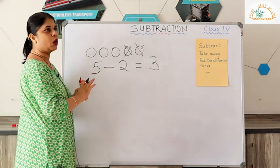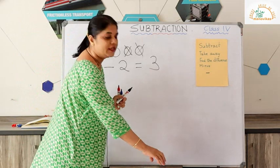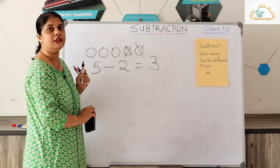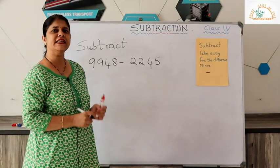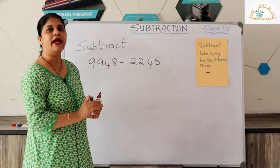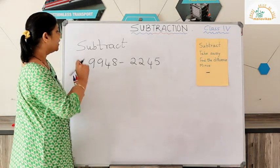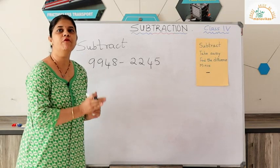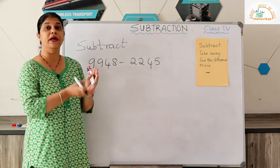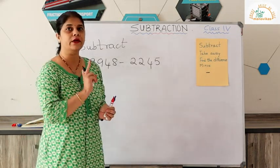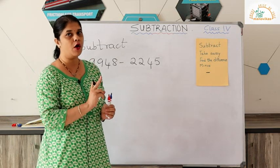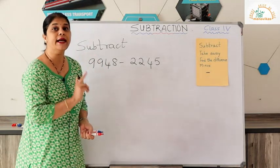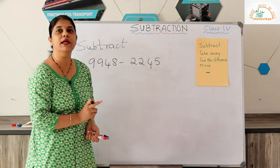With this basic concept in mind, we will see how to subtract large numbers up to four digits. To subtract any two given numbers, first we need to write them one below the other. Remember, we always write the greater number on top and the smaller number below it.